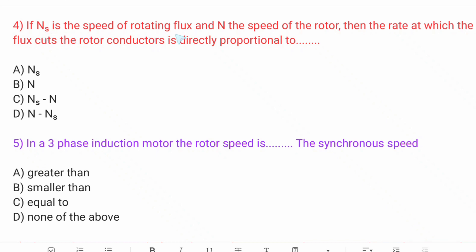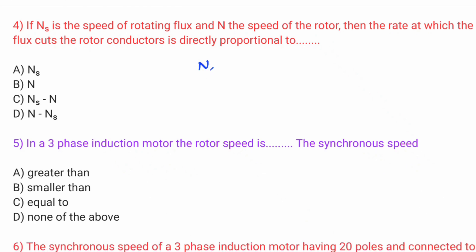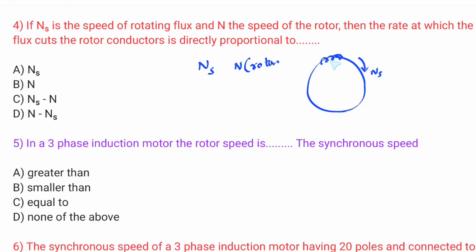If Ns is the speed of the rotating flux and N is the speed of the rotor, the rate at which the flux cuts the rotor conductors is directly proportional to the slip. The stator winding produces a rotating magnetic field at speed Ns. The rotor has a physical speed Nr. The relative speed between the stator field and the rotor determines the induced EMF in rotor conductors.